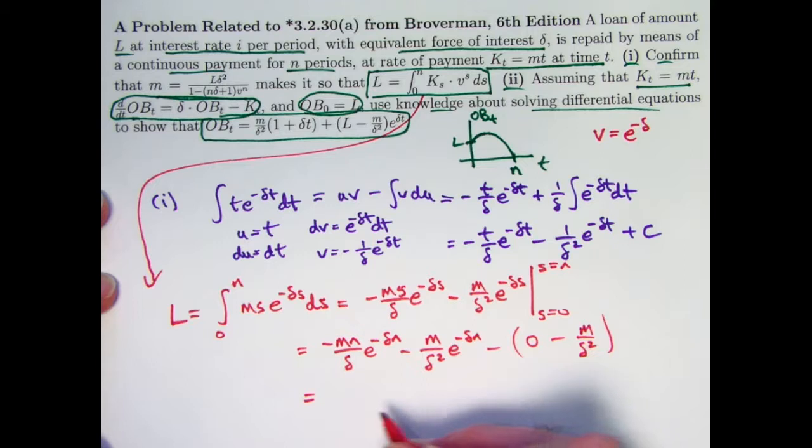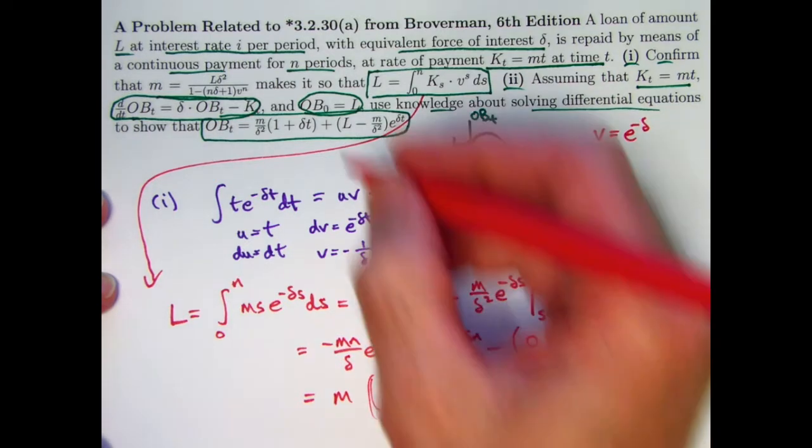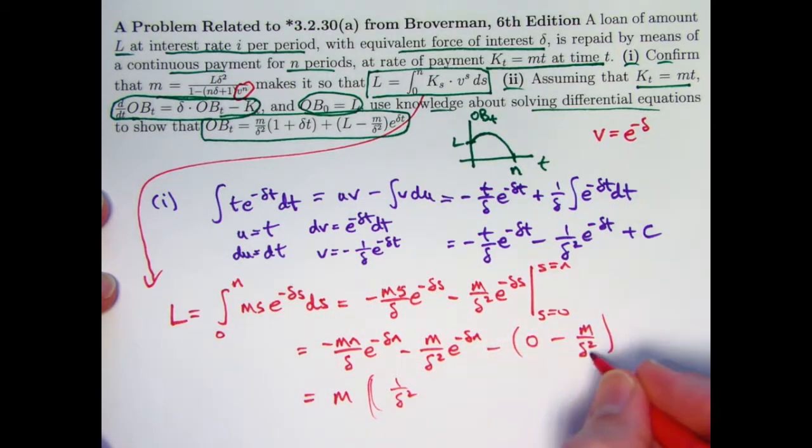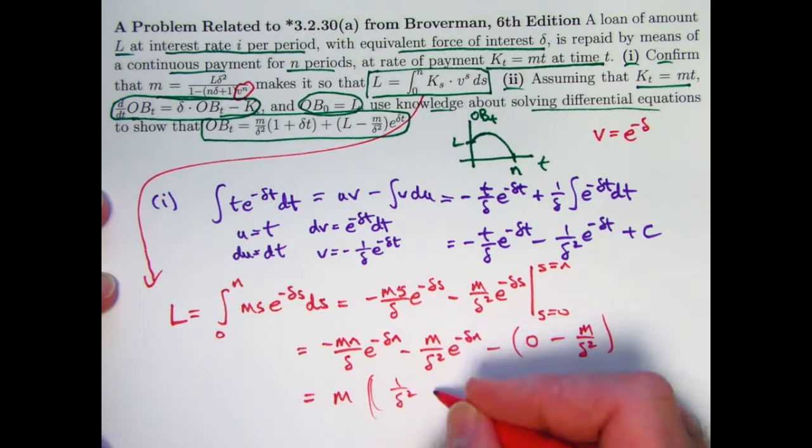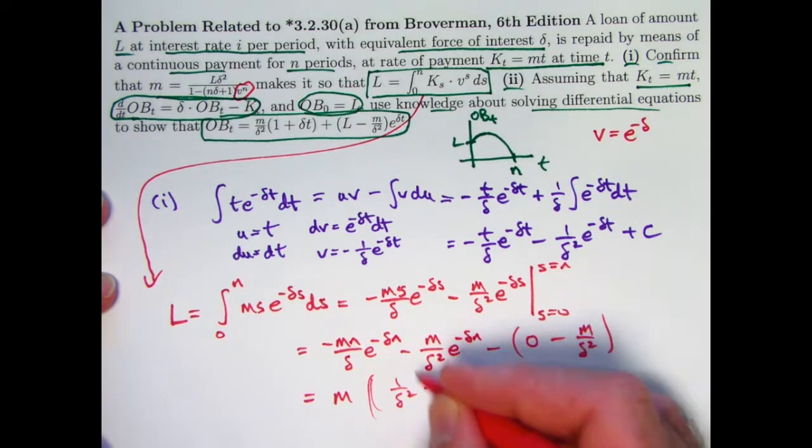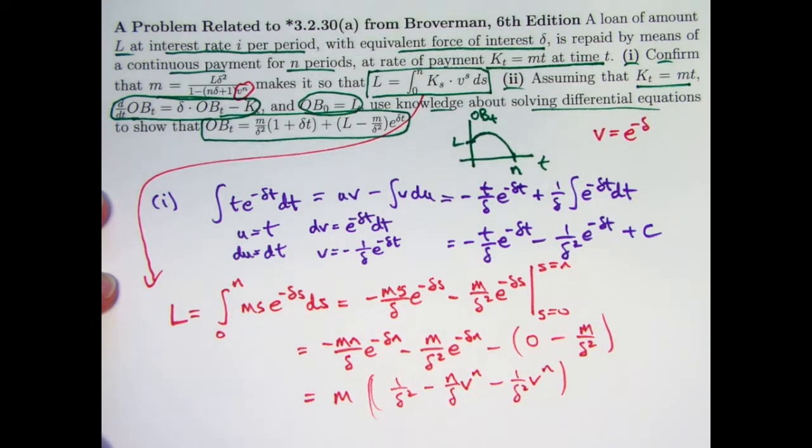We can factor out an M. I think that probably would be good to do. And I think I'm also going to replace the E to the negative delta N by V to the N since you see a V to the N up here. So we've got the 1 over delta squared there. For here we have a minus N over delta V to the N. And from this term, the M is factored out. We have a 1 over delta squared V to the N. This is starting to look good.